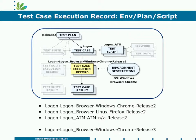This test case has two associated test scripts: one appropriate for testing from an ATM, and one appropriate for testing from browsers. You have different environments that you test in — Windows and Linux, Chrome and Firefox. Every single run of this test case involves a different set of releases, scripts, and environments that you want to keep track of for the lifetime of this test case. There is a unique test case execution record for each of those combinations.